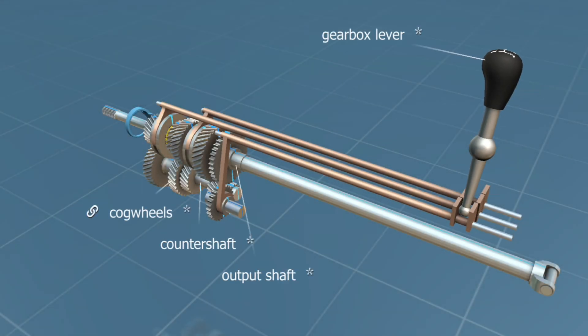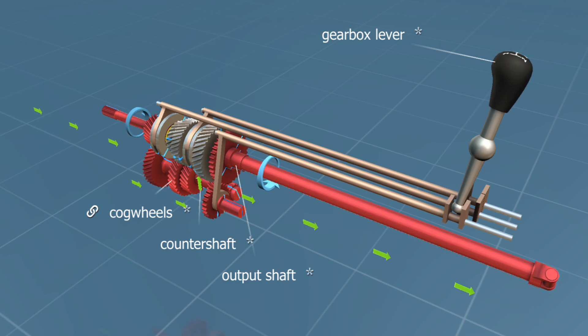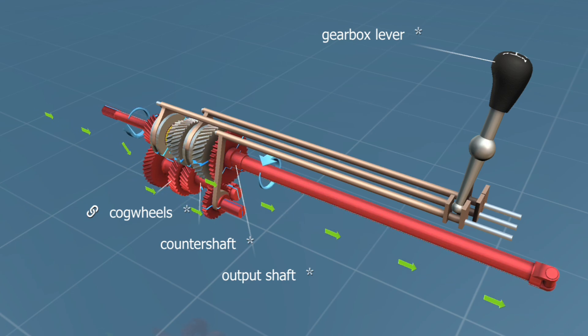In reverse gear, an additional gear is applied between the last gears on the lay shaft and the spline shaft. It changes the rotational direction of the output shaft, moving the vehicle backwards.